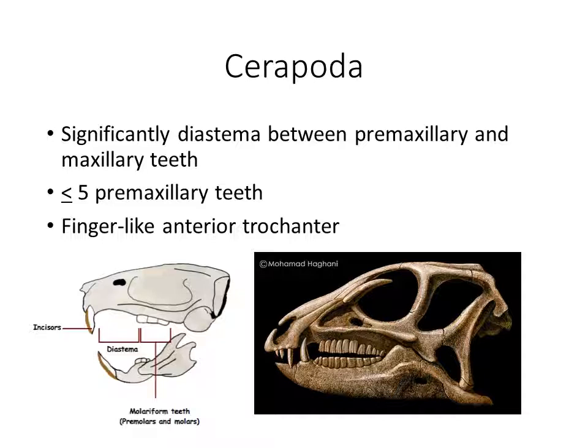One characteristic is a significant diastema between the premaxillary and maxillary teeth — that piece that separates the forward-biting teeth from the rear grinding teeth, or in the case of these animals, the forward-biting beak from the rear grinding teeth. This is really characteristic of a group that is intensely associated with chewing and mastication of food. There are going to be relatively few premaxillary teeth — most groups will have none and will use a beak.